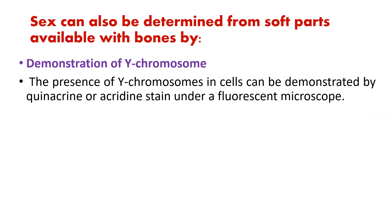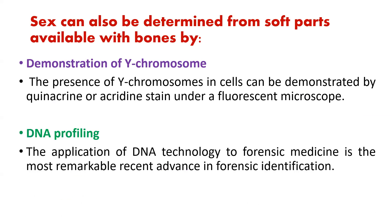Sex can also be determined from soft parts available with bones by demonstration of the Y chromosome. The presence of Y chromosome in cells can be demonstrated by quinacrine and acridine stain under a fluorescent microscope. DNA profiling is also a remarkable technique — the application of DNA technology to forensic medicine is the most remarkable recent advance in forensic identification, and from DNA profiling we can also determine sex.